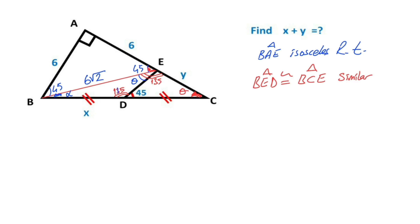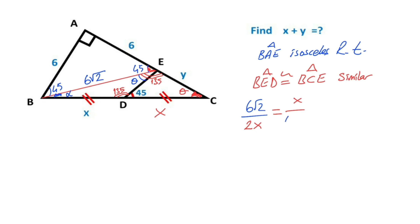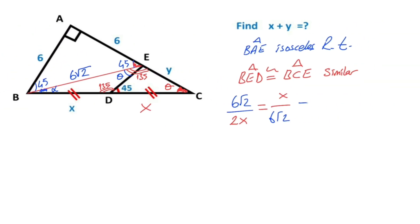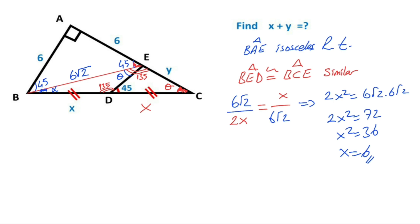That means triangle BED and triangle BCE are similar because they have the same angles. So: 6√2 (opposite the 135°) over 2x equals x (opposite theta) over 6√2 (opposite theta). That means 2x² equals 6√2 times 6√2, so 2x² equals 72, x² equals 36, therefore x equals 6 units.